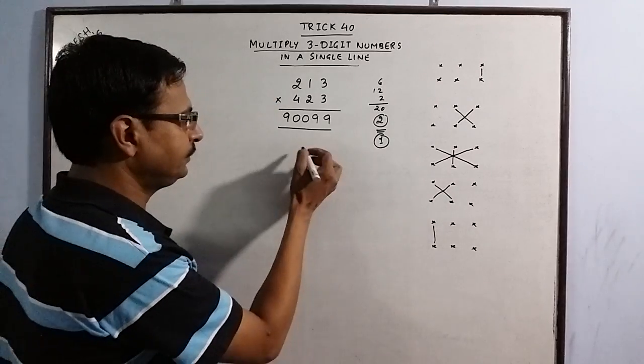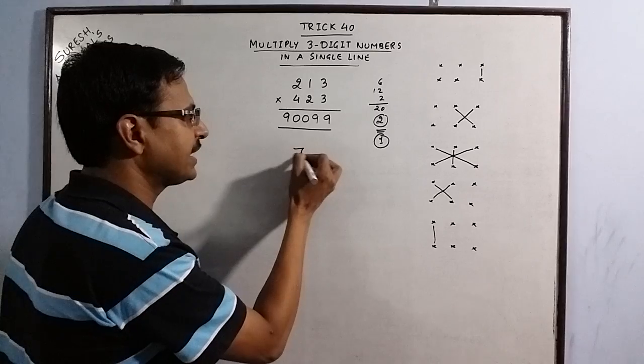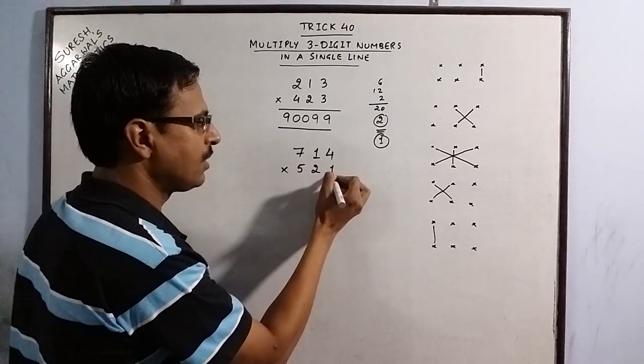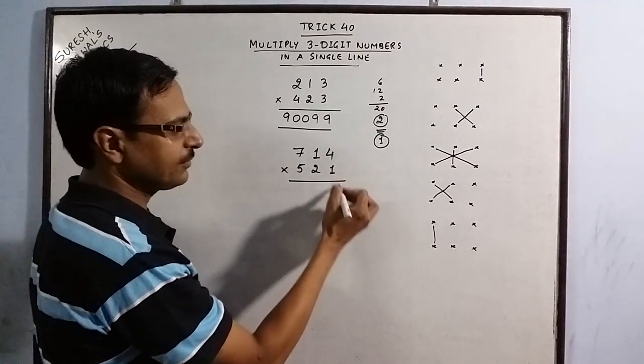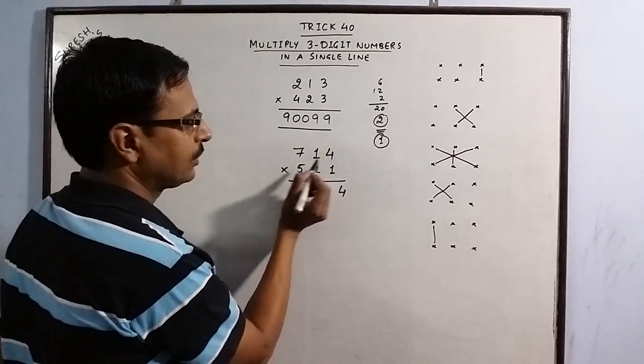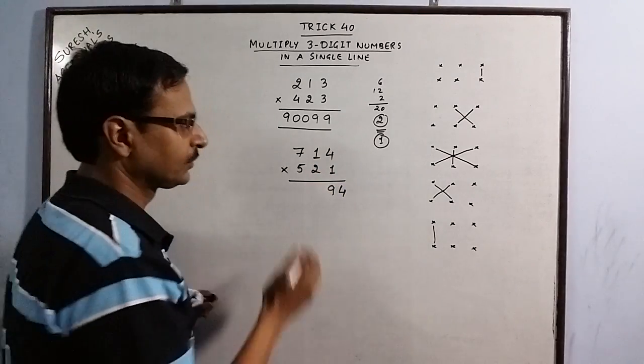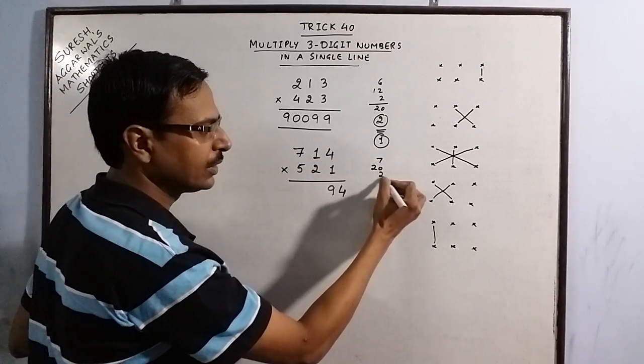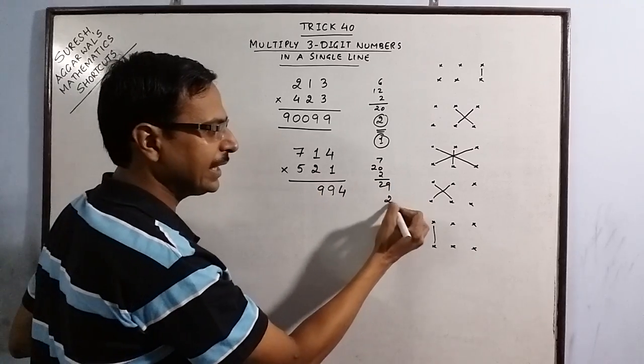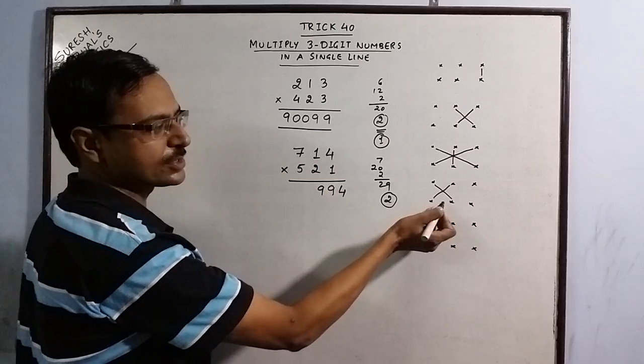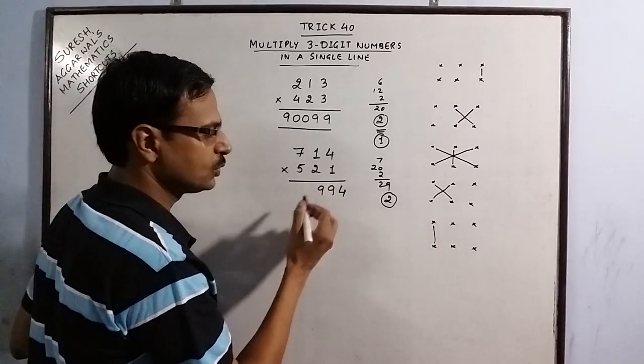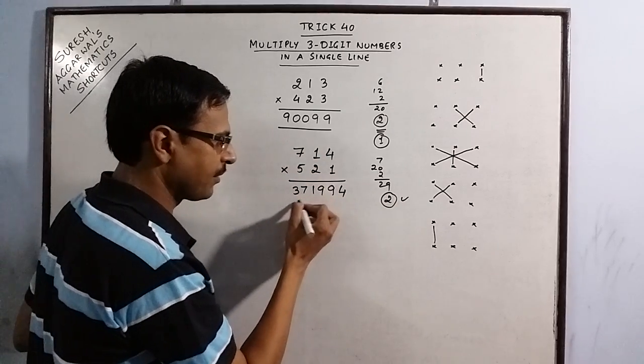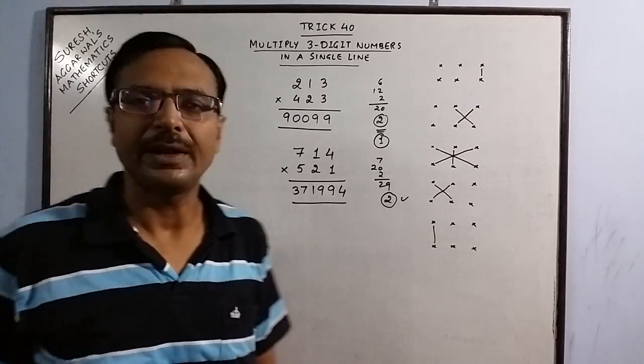See we will take one more example here. I will take a little bit of higher numbers. I am taking 714 multiplied by 521. Now see first step 4×1 are 4, second step 8 plus 1, 9 no carries. Third step 7, 20 and 2, 29 so we have 9 and 2 carry. Next step 4th step 14 plus 5, 19 plus 2, 21 again 2 carry. 7×5 the 35 plus 2, 37 so answer is 371994.